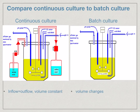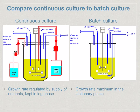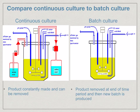In continuous culture, inflow equals outflow so the volume is constant; in batch culture, the volume does change. In continuous culture, the growth rate is regulated by the supply of nutrients and bacteria are kept in the log phase; in batch culture, the growth rate maximum is in the stationary phase. In continuous culture, the product is constantly made and can be removed; in batch culture, the product is removed at the end of a certain time period, and then a new batch is produced.